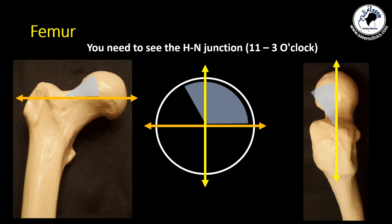Concerning the radiographic diagnosis of femoroacetabular impingement on the femoral side, or the CAM deformity: the CAM deformity lies at the head and neck junction between three o'clock, which is the most anterior, and goes superiorly up to the most superior or posterosuperior area, which is the eleven o'clock position.